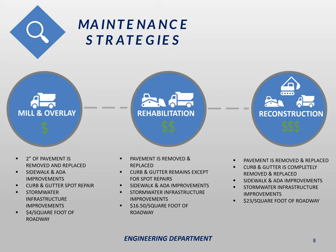A reconstruction is the third type of project, where we completely replace the pavement and the curb and gutter. This is the most complex project type we perform and typically costs about $23 per square foot of roadway — almost eight times what a mill and overlay will cost.